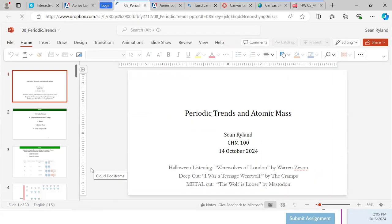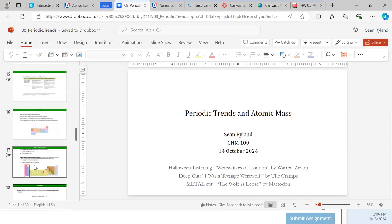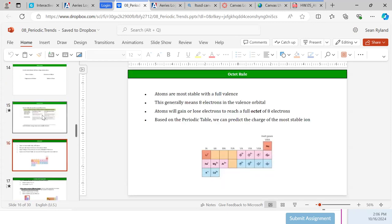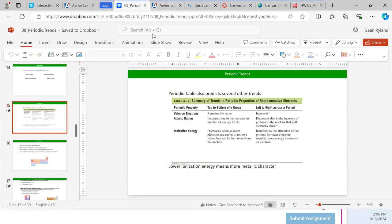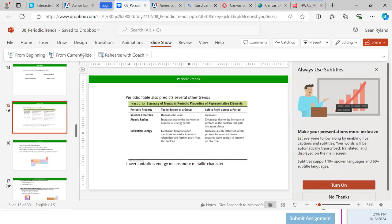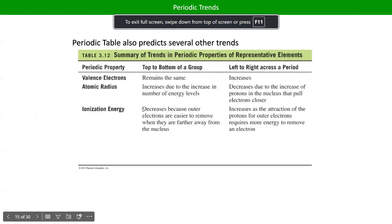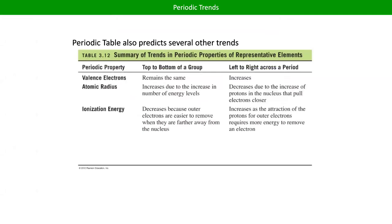Let's talk about one more periodic property — actually two more with two names. Ionization energy is the energy required to take an electron away. There's a periodic property called electron affinity that's the exact opposite — it's how much energy something releases when you give it an electron. Affinity means an attraction; electron affinity is how much something wants to gain an electron.